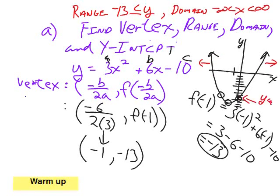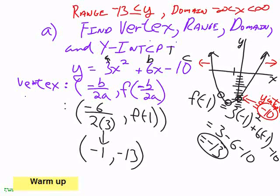The range is greater than negative 13. The domain, for these particular functions and for most of the ones we've studied so far, goes from negative infinity to positive infinity. The y-intercept is negative 10 — that's where x is zero. Solving for the x-intercept is actually our algebra unit, because that's a little more complicated. So we don't really worry about x-intercepts until unit C, algebra.